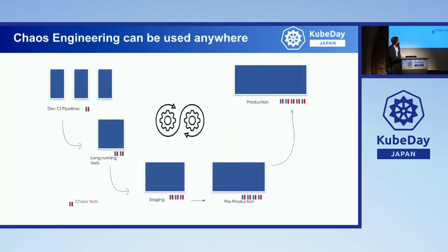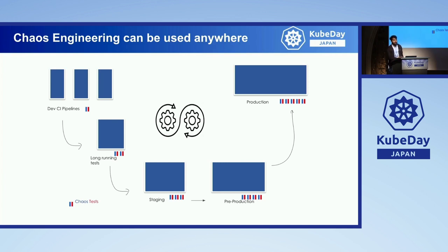Where can chaos be used? It's not just about running it in production. The eventual goal is to run chaos engineering in production, ensuring your production systems are resilient, but you can run it anywhere — dev CI pipelines, staging environment, pre-production. There are a lot of tools. It all started with Chaos Monkey, which is open source and used for simple production failures. Then came the Simian Army, and then newer tools — Gremlin, Chaos Mesh, and many more.